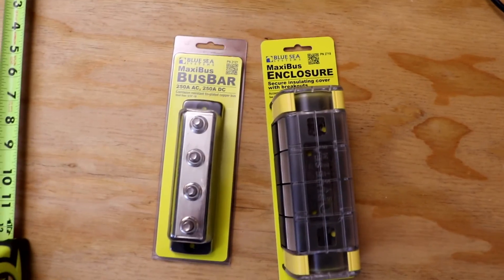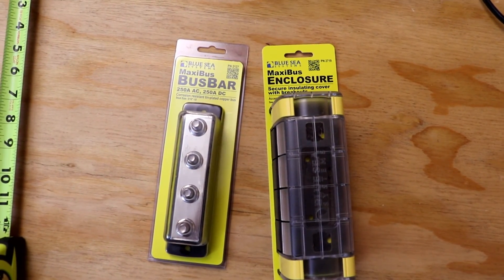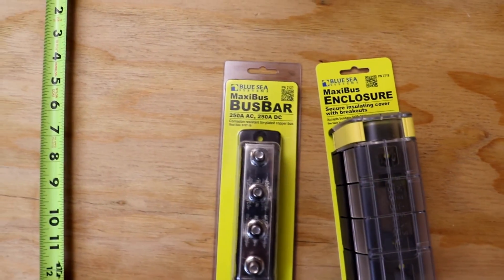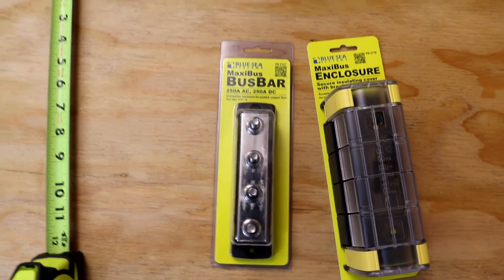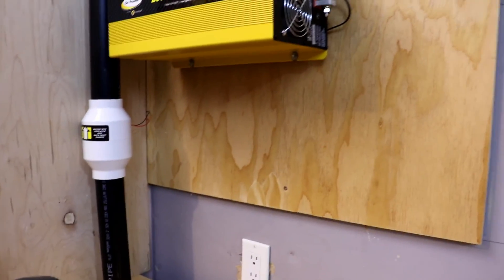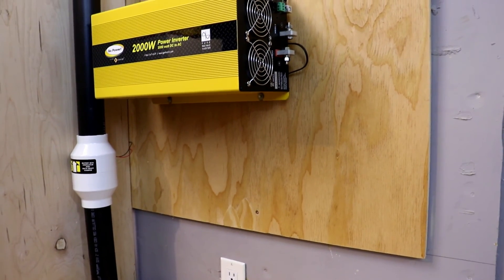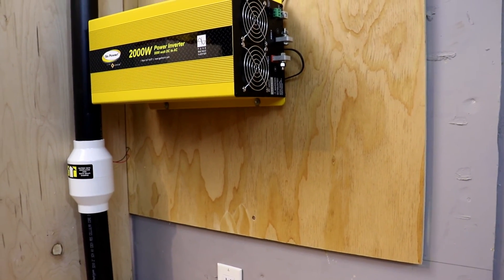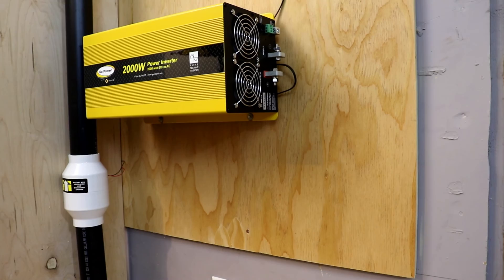Next items to go up, we're going to get the Maxi Bucks enclosure as well as the bus bar. And then from there, we're going to be able to start running some wires. I'm probably going to put that thing down here somewhere and we'll be able to show you that when we get it done.